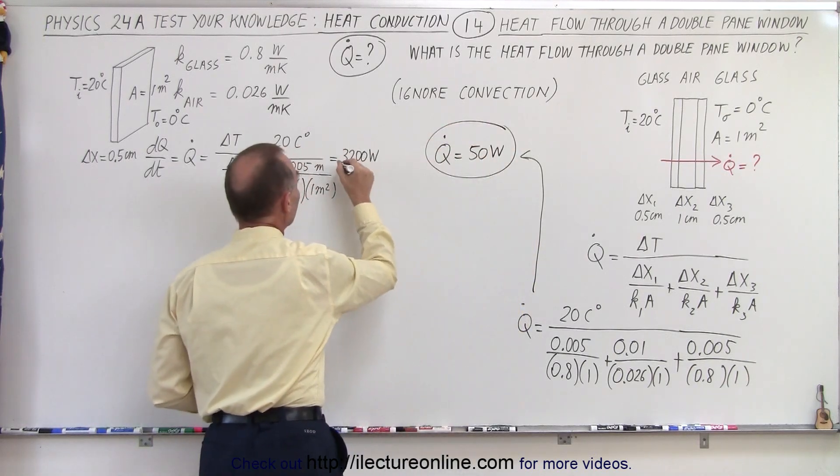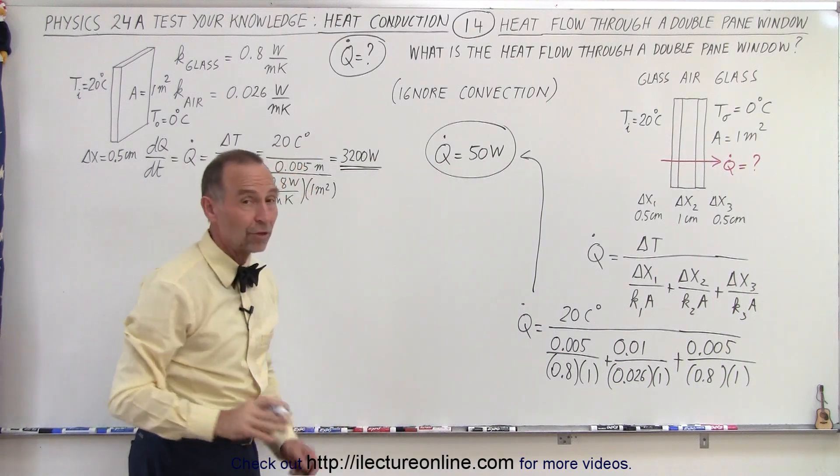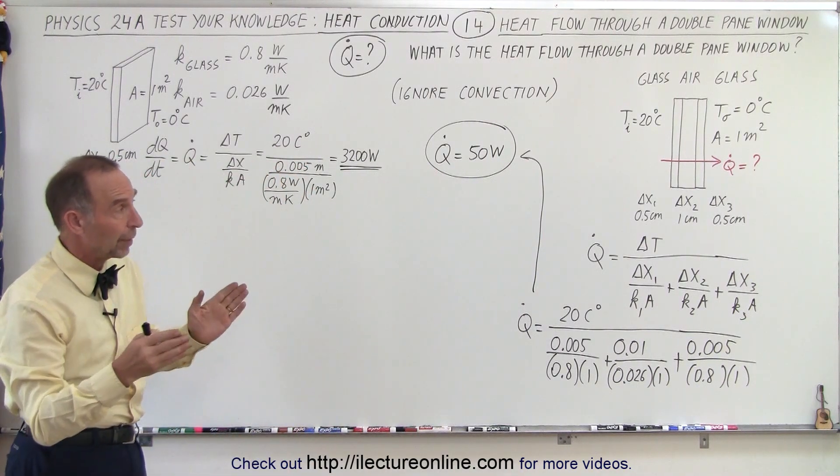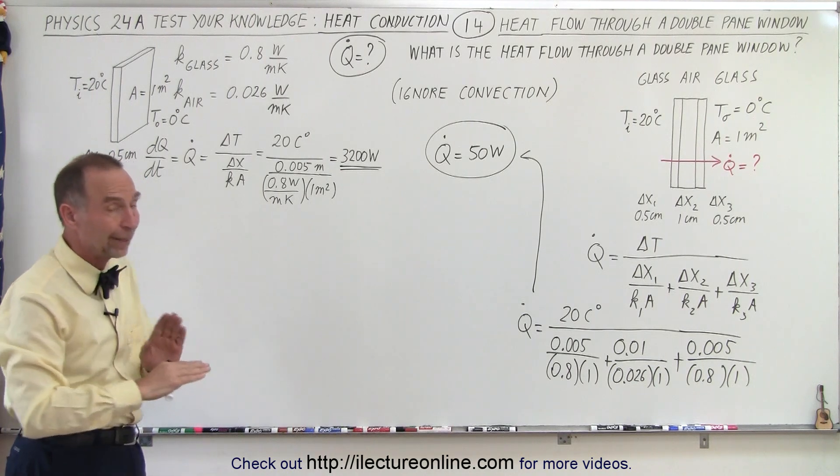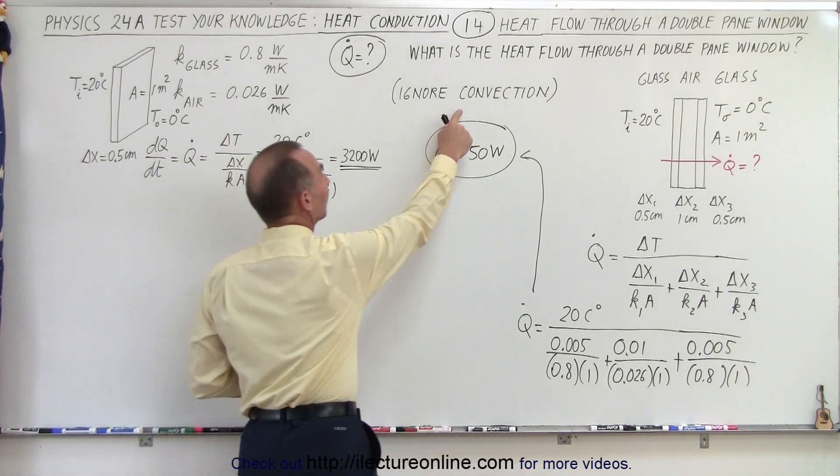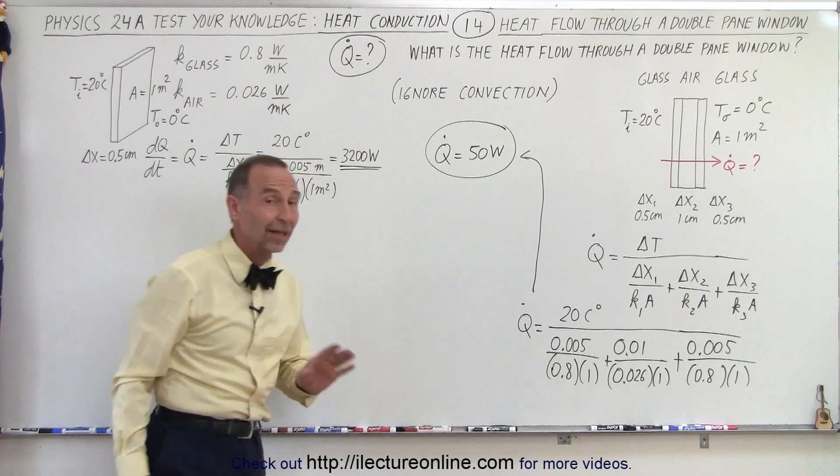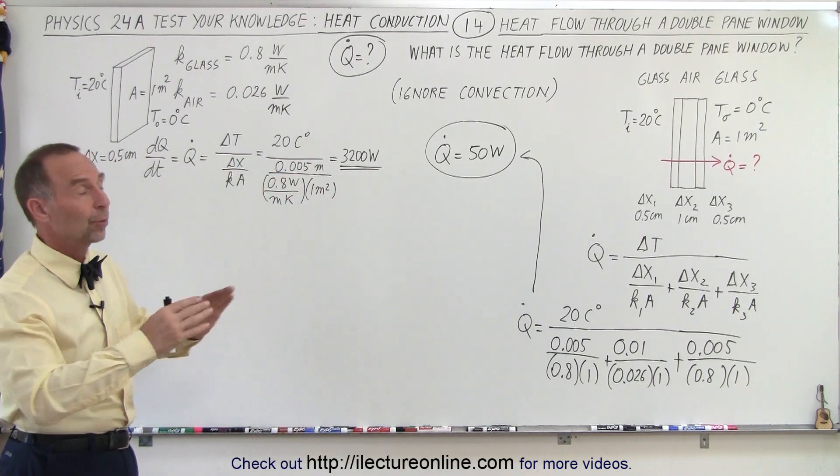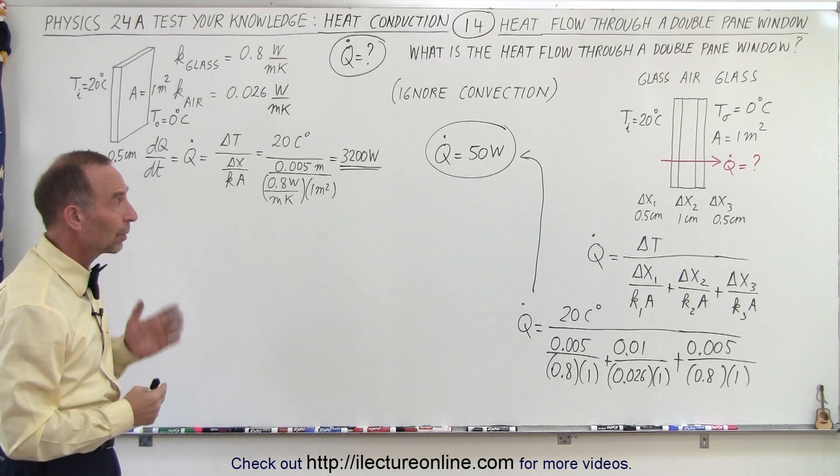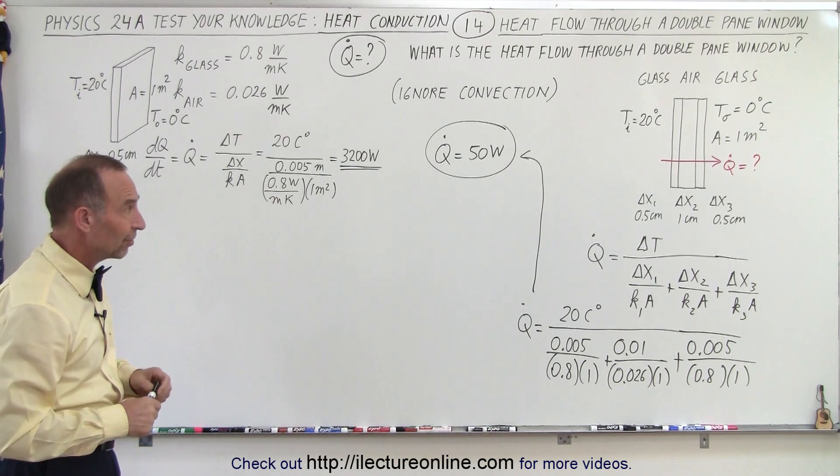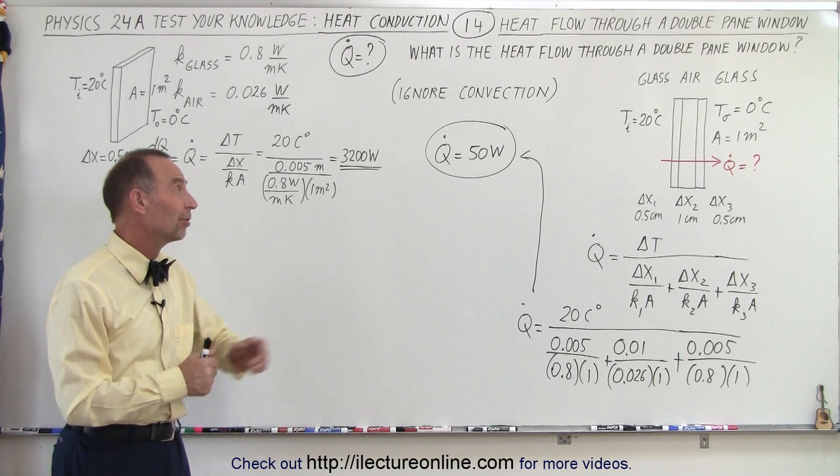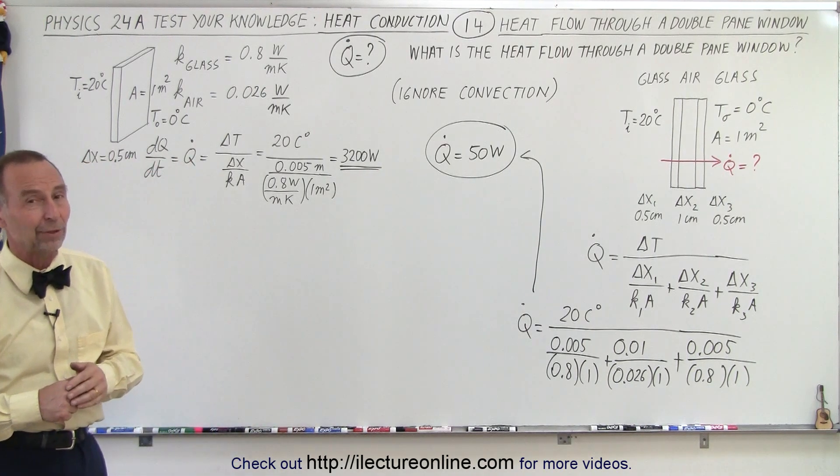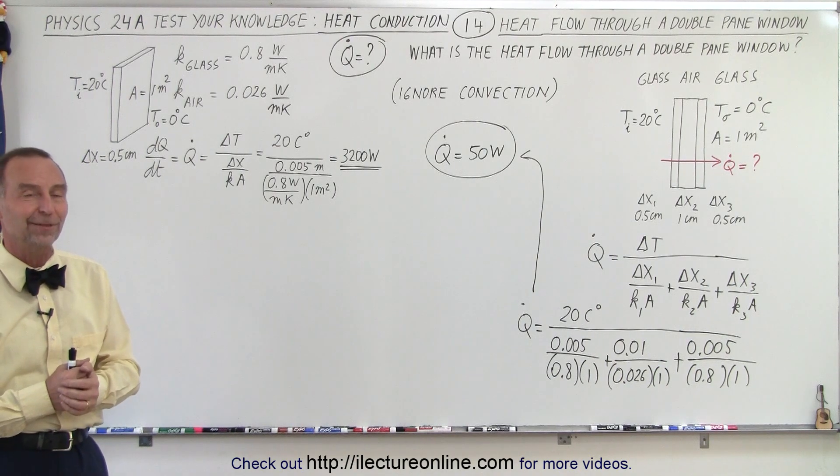Instead of the 3200 watts for a single pane window. So you can see there's a huge difference in the heat transfer through a double pane window compared to a single pane window, ignoring convection on both sides of the glass. Now that is a big deal. The difference is not going to be nearly that large when we take convection into account, but at least at this point, not counting convection, there's a tremendous heat loss through a single pane window, as compared to a double pane window. And that is how it's done.